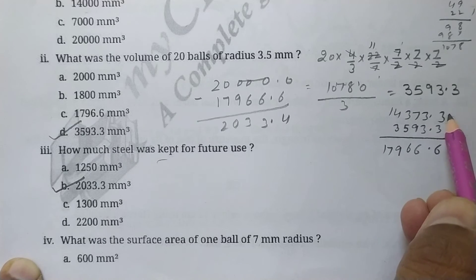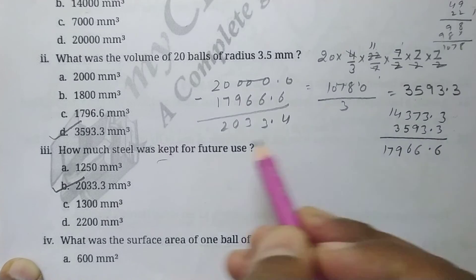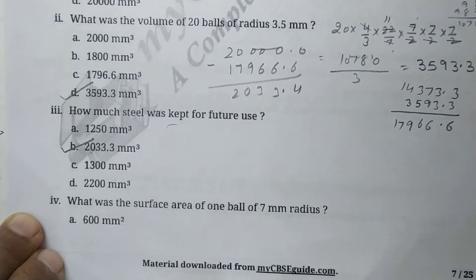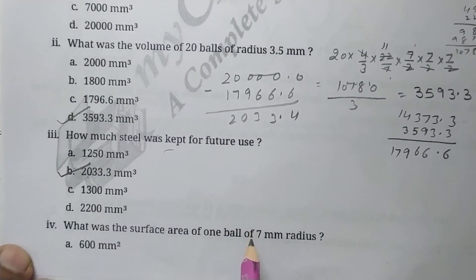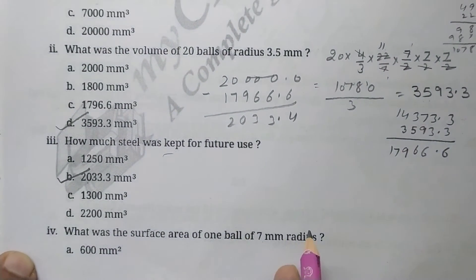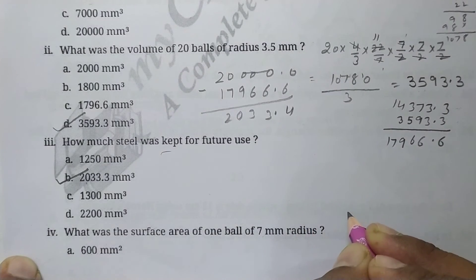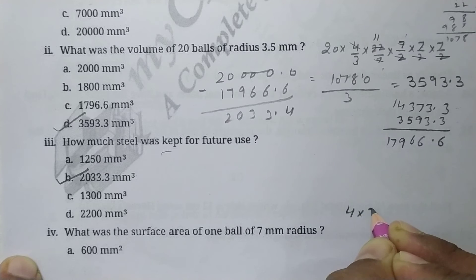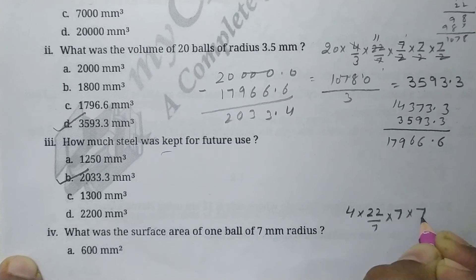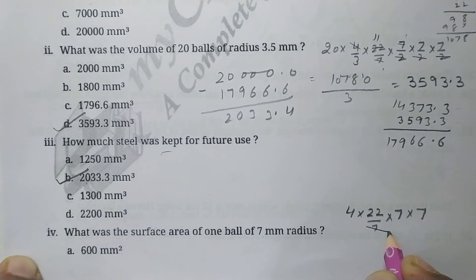So next is, what was the surface area of one ball of 7 mm radius? So surface area, what is surface area of sphere? That is 4 pi r square. 4 pi, r is 7, r square, so 7 times 7 cut, 7 fours are 28, 28 twos are, 28 twenty-twos are.